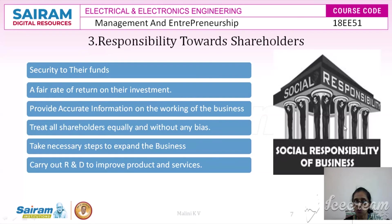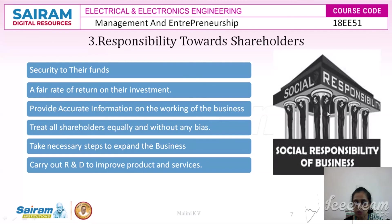The third responsibility is towards shareholders, who have invested their money with trust in the organization. The business must provide security to their funds and a fair rate of return on investment. If returns are low, shareholders will withdraw and invest elsewhere. The organization must provide accurate information on the working of the business, and treat all shareholders equally and without any bias.